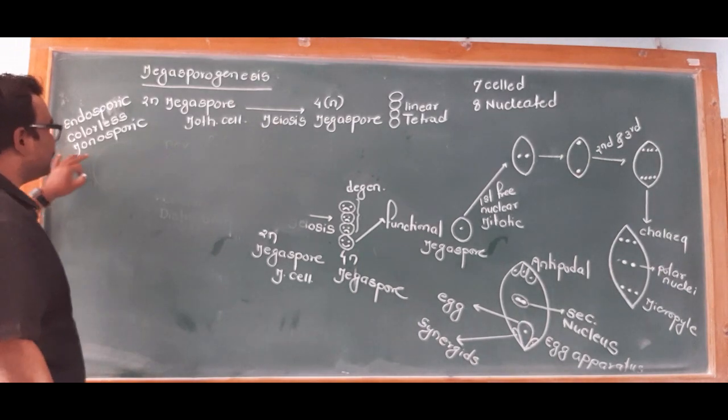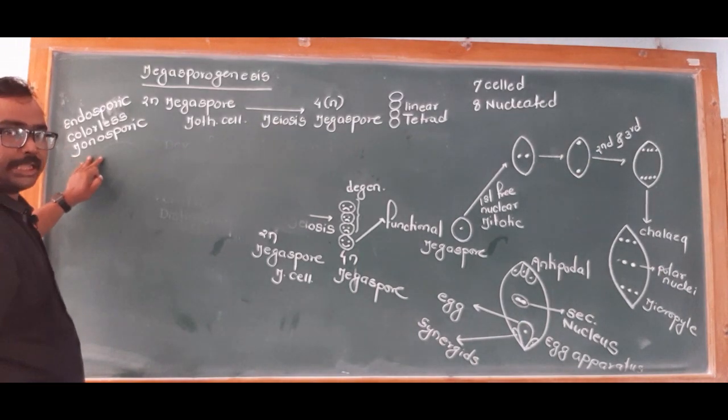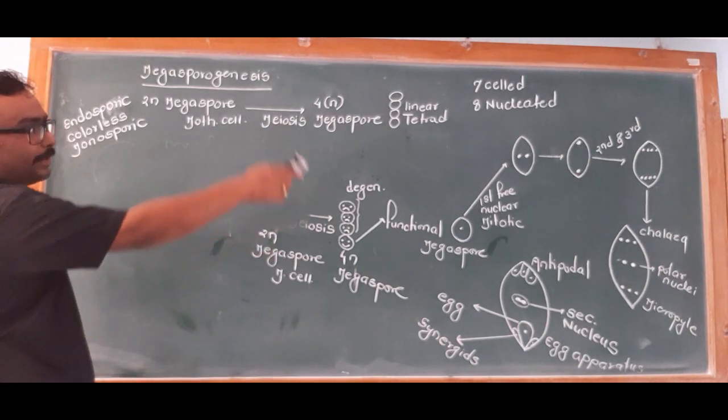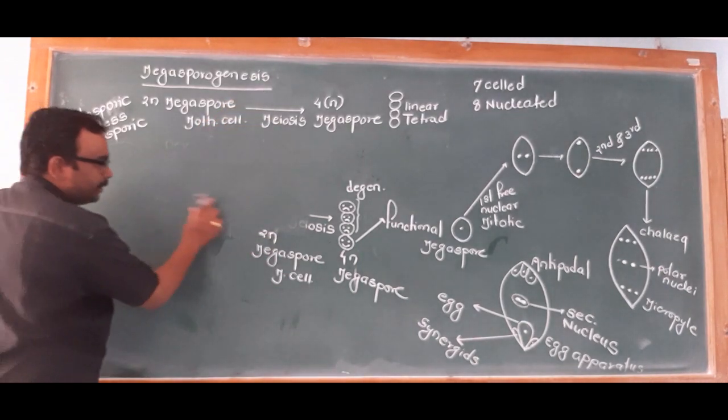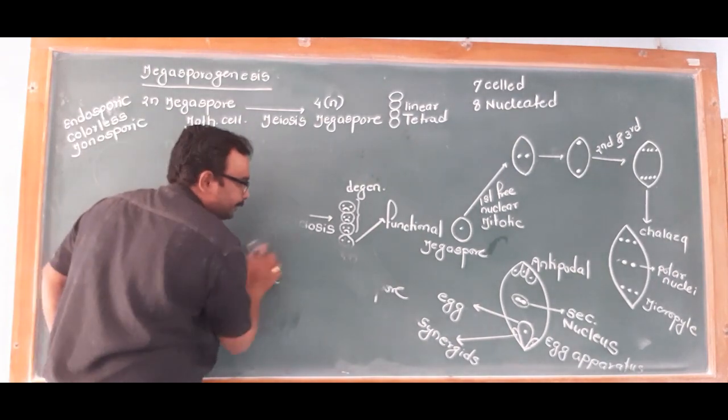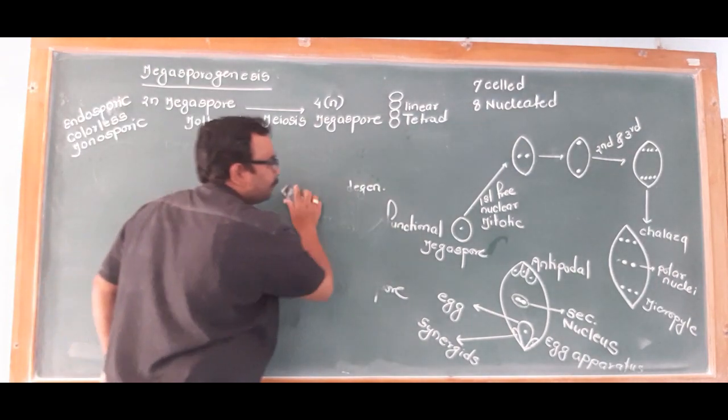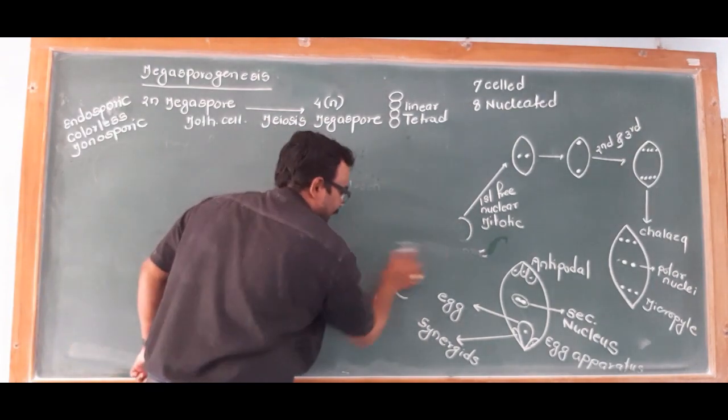To summarize the key characteristics: the female gametophyte development is endosporic, colorless, and monosporic. The female gametophyte is 7-celled and 8-nucleated.